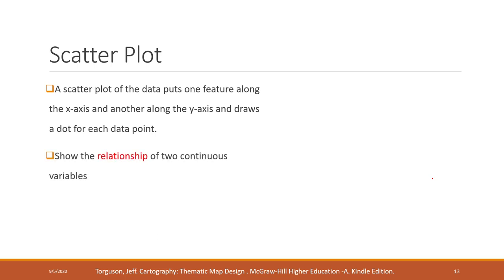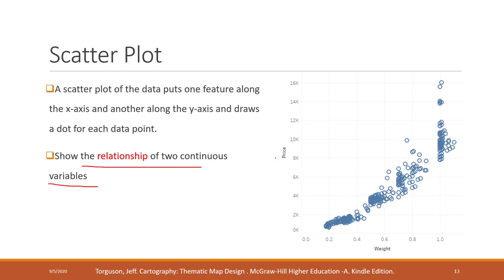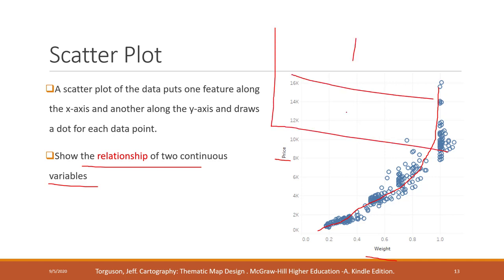A scatter plot is another great tool that can show the relationship between two continuous variables. Instead of just calculating the correlation coefficient, we can create a scatter plot and visually see how two variables are correlated. In this case, we can see that price and weight are strongly correlated with a positive relationship, and the relationship is not linear. This is far better than simply calculating the correlation coefficient because the visualization gives us more detail about the patterns.